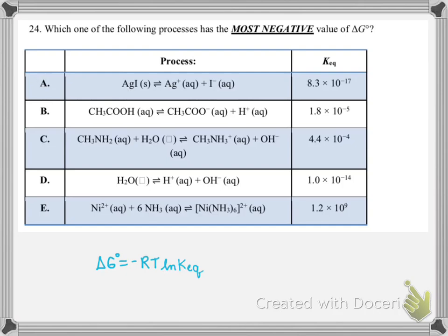In number 24, we're trying to figure out which reaction is going to have the most negative value of standard delta G. We remember our standard Gibbs free energy is related to our Keq — a bigger Keq is more products-favored and corresponds to a more negative standard delta G. So we just want to pick the reaction that has the biggest Keq, and for this problem that's going to be E because it has the greatest Keq. You could go ahead and plug all of these Keqs into the equation to get the standard delta G values, but that would just be a little bit of a hassle.